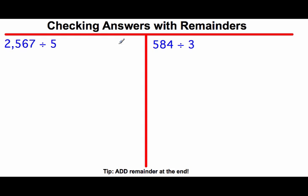Some answers are going to have a remainder. So this slide is going to show you how to check your answer if it has a remainder. So the first problem is 2,567 divided by 5. I'm going to use traditional for this one.